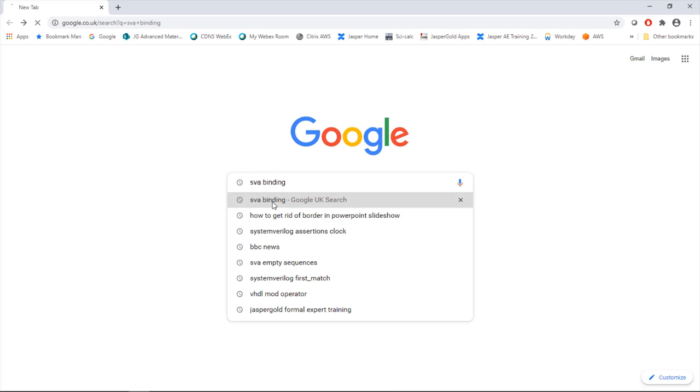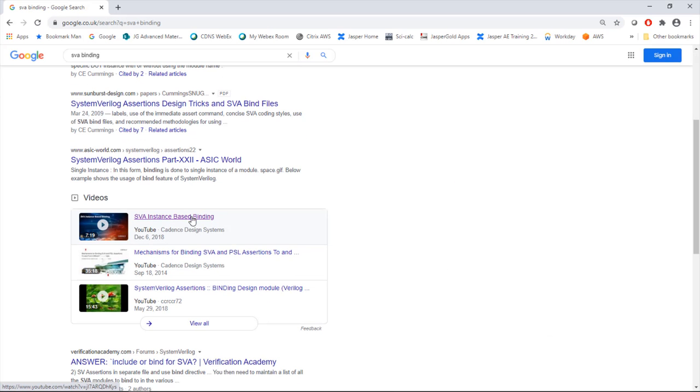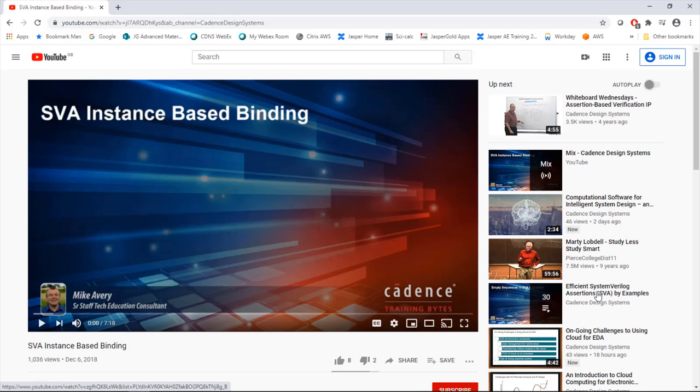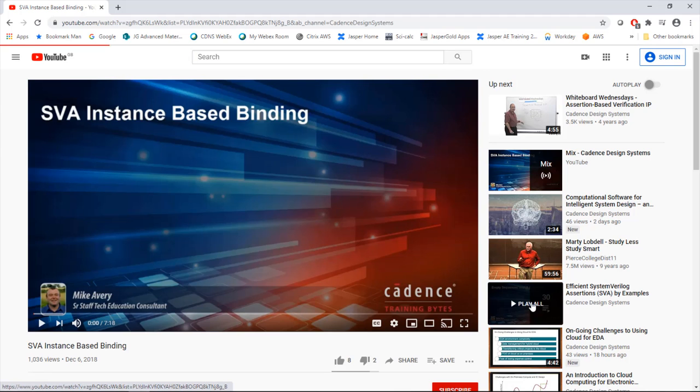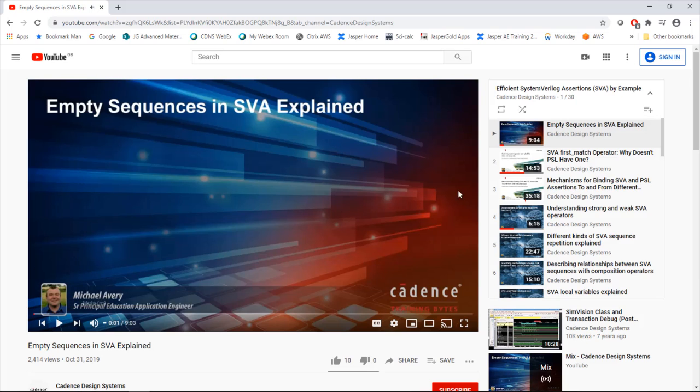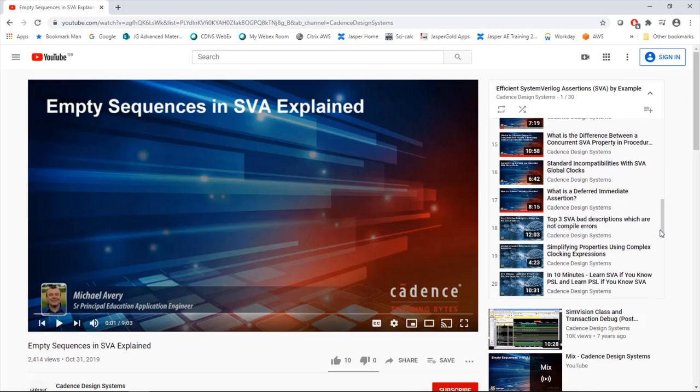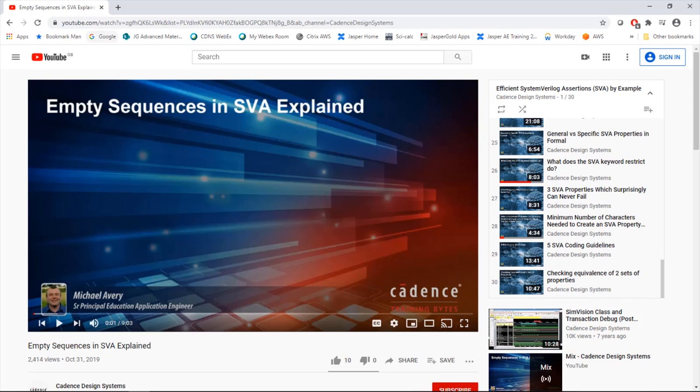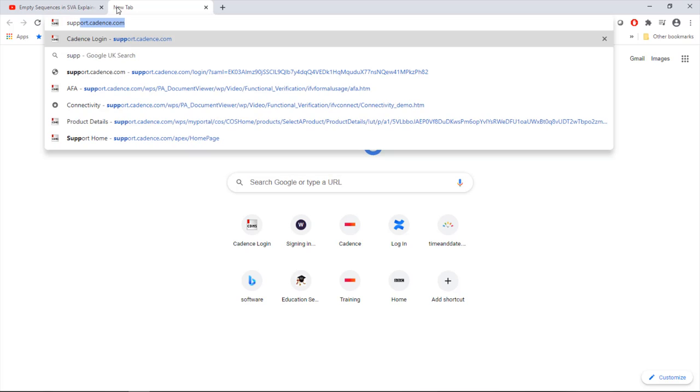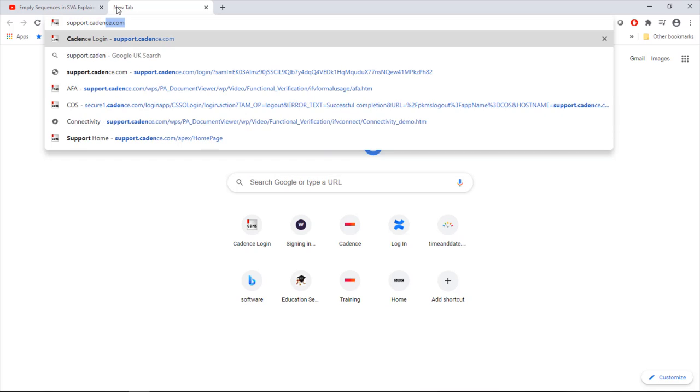If you go to Google and search for SVA binding choose this video here SVA instance based binding. What you'll also see is this channel here efficient SystemVerilog assertions by examples. So if you just searched in YouTube for SVA examples this would come up. It's a playlist of 30 different videos on SVA. You can see them all listed here and there might be some interesting topics for you in there.